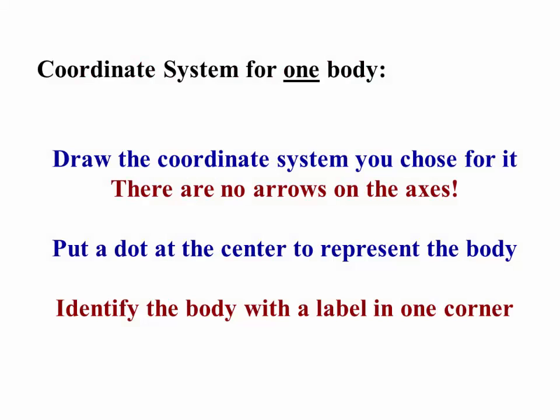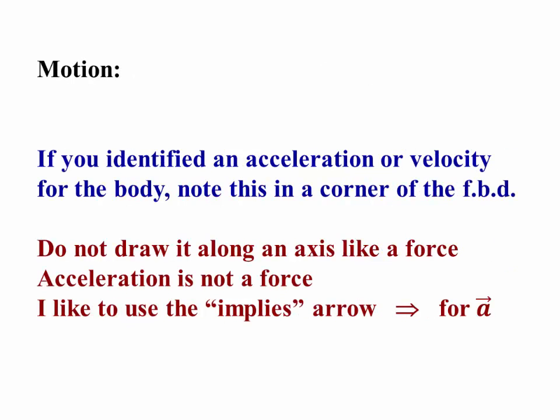The coordinate system for one body is one that you should have already chosen from the environment or from the motion of the problem. When you draw it, there are no arrows on the axes. Arrows appear only for forces. Put a dot at the center to represent the body. There's no box or triangle or circle or whatever, just a big black dot. And identify the body with a label in one corner of the free body diagram so you can keep track of which diagram is for which object.